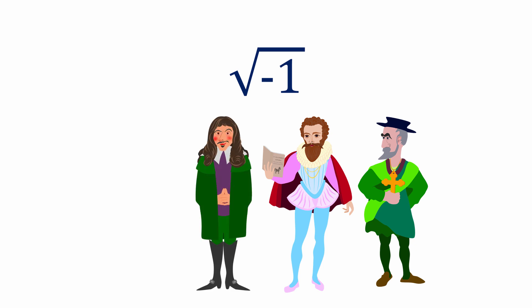In 1637, René Descartes said that the square roots of negative numbers had no place in serious mathematical work, referring to them with contempt as imaginary numbers. Little did he know at the time just how useful they would one day become and that the name he had given them would stick.